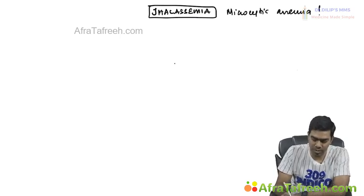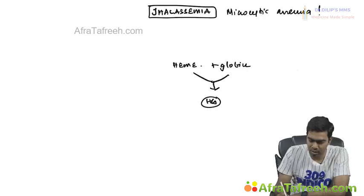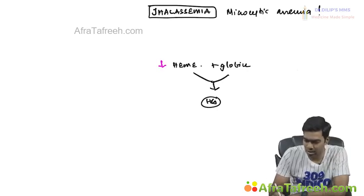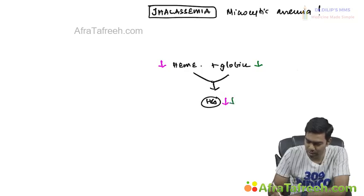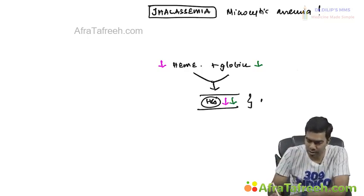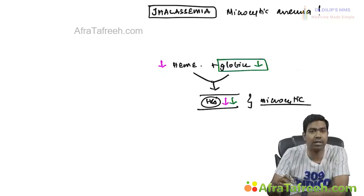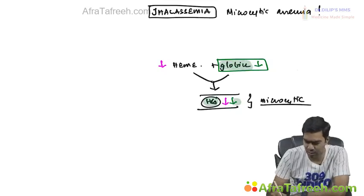The reason is reduced globins. As I told you, heme and globin together result in hemoglobin. Either a reduction in heme synthesis or a reduction in globin chain synthesis will result in reduced hemoglobin in the cytosol, leading to a microcytic anemia. Thalassemia falls under this category where globin chain synthesis is reduced.